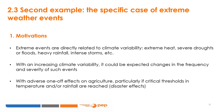In the second example, we chose to focus on the specific case of extreme weather events. The occurrence of such events — for example, extreme heat, severe droughts and floods, heavy rainfall, intense storms — is directly associated with climate variability. With an increasing climate variability, it can be expected that there would be changes in the frequency and severity of these extreme events. Focusing on these specific cases is interesting as, when they occur, they have disastrous effects on the agricultural sector, particularly if critical thresholds in temperature and rainfall are reached.